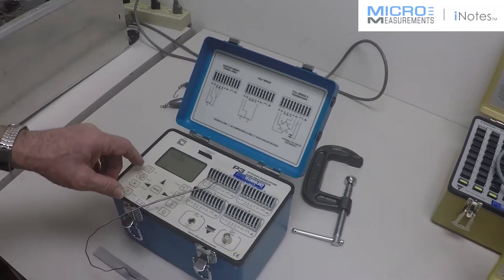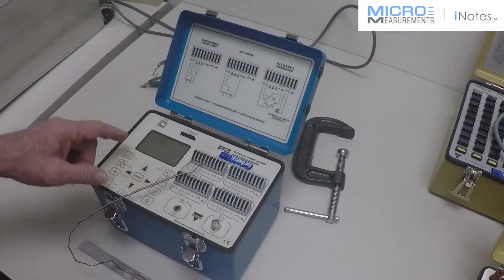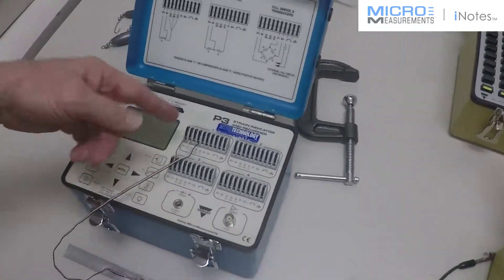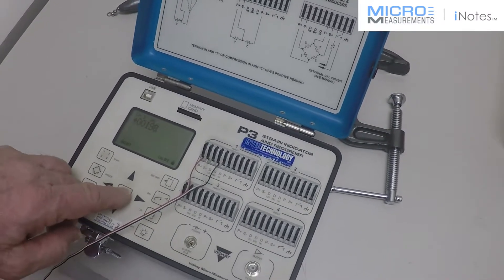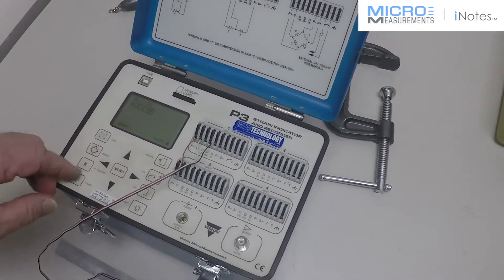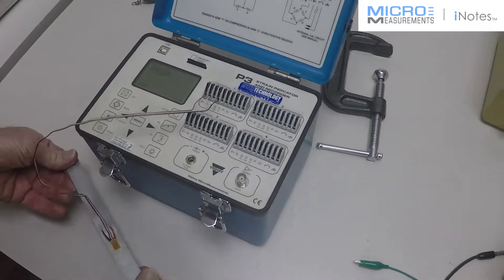What we have is a reading here on channel one of a single gauge attached to the recorder, and we can see that there is a strain gauge response there.